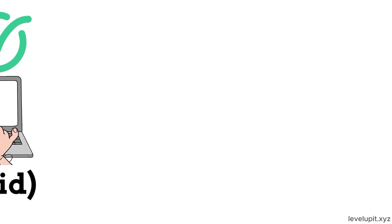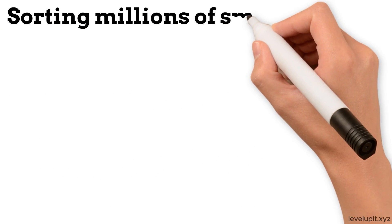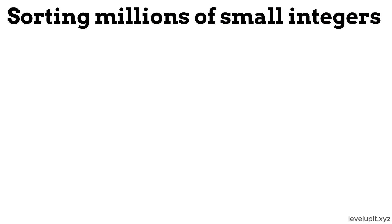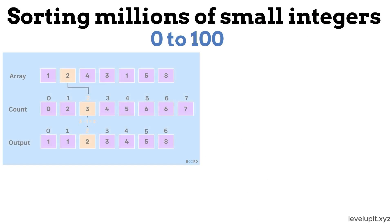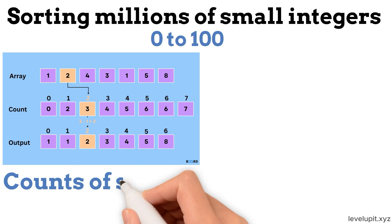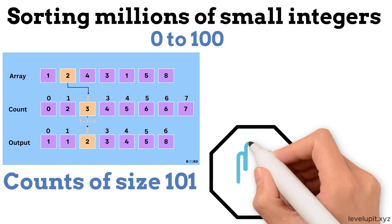If you are sorting millions of small integers in a bounded range, like test scores from 0 to 100, counting sort can be incredibly fast. Build an array of counts of size 101, then rebuild the sorted output.